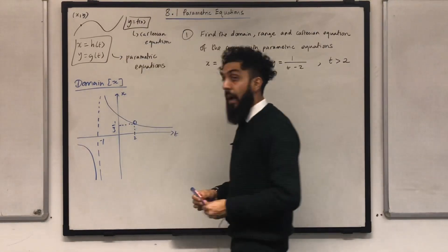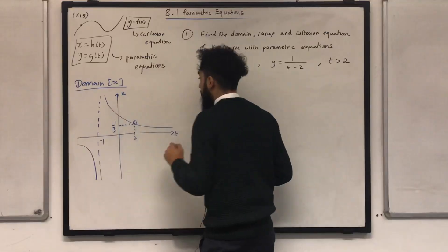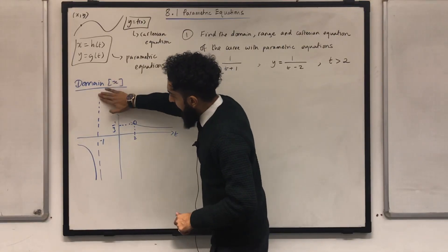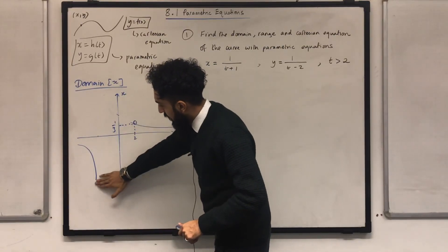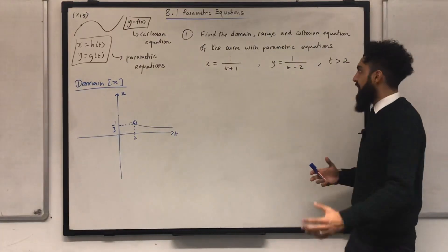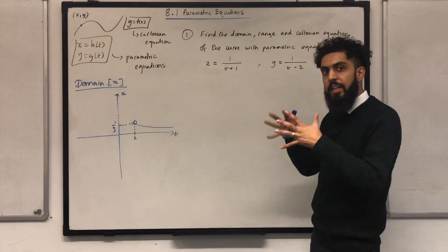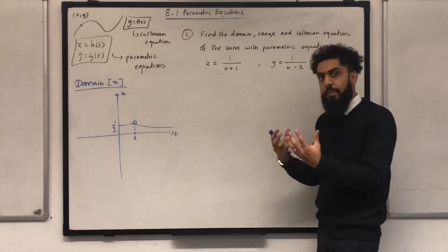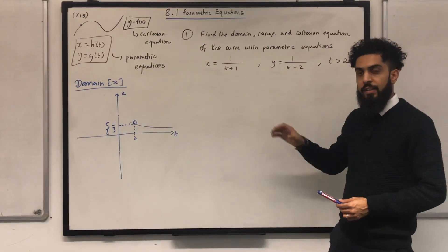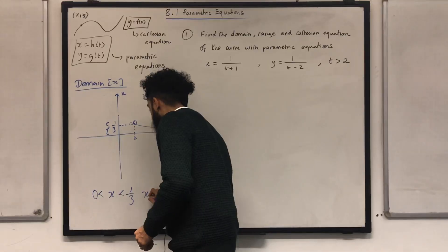I draw a circle here but don't shade it because t equal 2 is not included in this inequality. My next step is to get rid of the part of the graph that represents t less than or equal to 2 — the asymptote and this particular curve. That's my sketch of x against t for the restriction t is greater than 2. Focusing on the x-axis, I can see that x will be more than 0 but less than 1 over 3, and x is a real number.